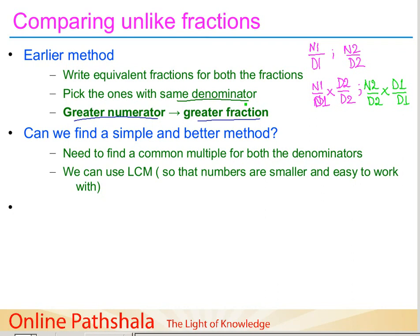Now let us see the disadvantages of both methods. In the first method, we have to write down equivalent fractions until we locate a common denominator, which in some cases could require finding many equivalent fractions — a tiring process. In the second method, the product d1 times d2 could come out to be a huge number, so while it is better than the first, it is still not the best method.